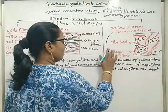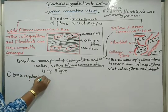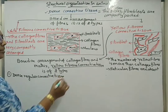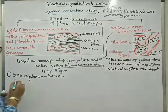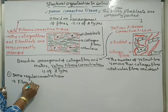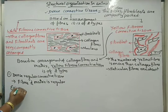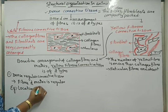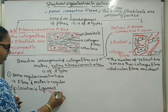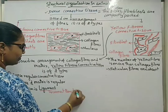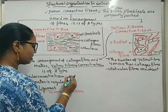The first one is dense regular connective tissue. Here, the elastic yellow fibers, collagen fibers, and matrix are regularly arranged. Where can we see such types of tissue? The fibers and matrix are regular. The location of this dense regular connective tissue is ligaments. Ligaments connect bone to bone. This dense regular type of connective tissue is also called a cord.